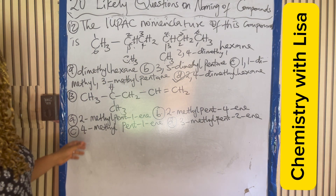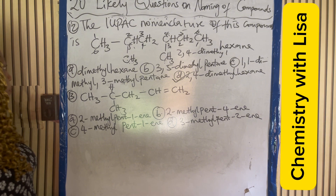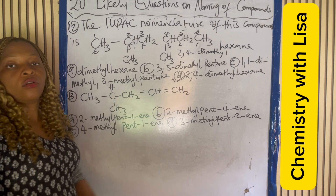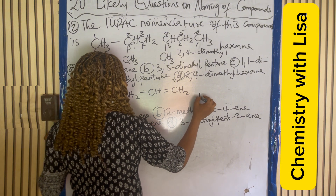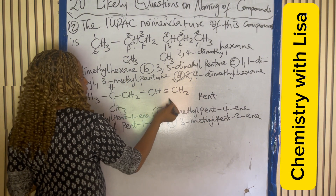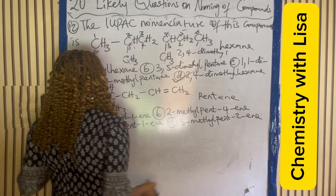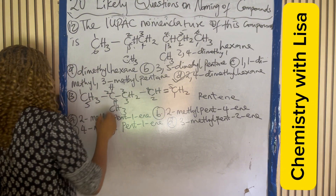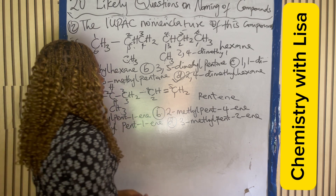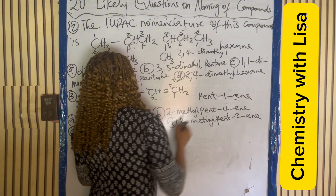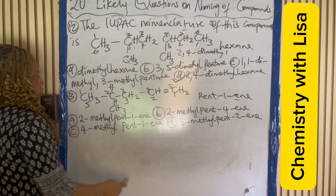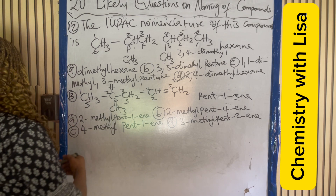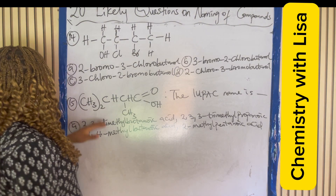Next question: name this compound. Counting one, two, three, four, five — five carbons gives 'pent.' There is a double bond, so this is the alkene family. Numbering: from one end the double bond is on carbon four, from the other it is on carbon one. One is lower, so we go that direction: pent-1-ene. The substituent is at carbon four: 4-methylpent-1-ene.